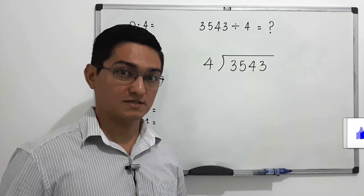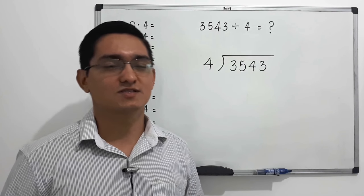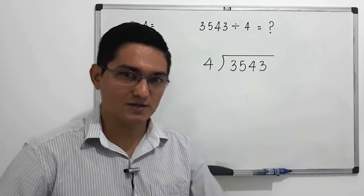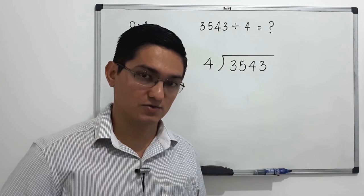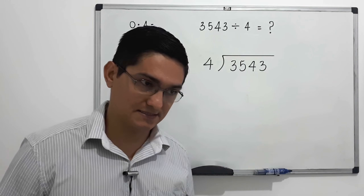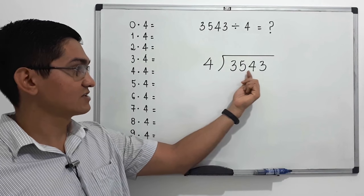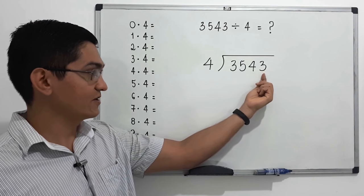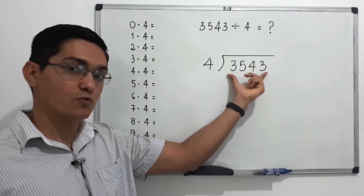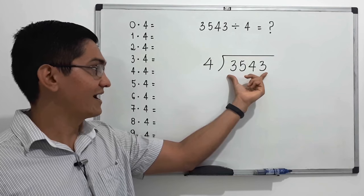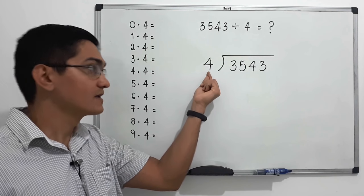Before we get started, I ask you to give us a thumbs up if you support this channel. Be sure to subscribe if you want to get to know about our new videos. Let's get started. 3543 is our dividend — the value we will divide into four equal parts. Four is our divisor.